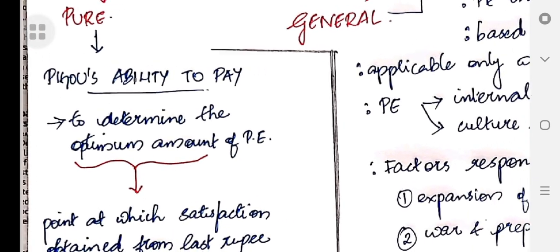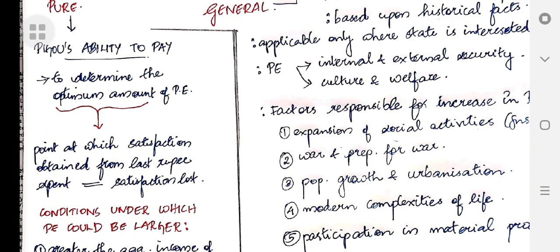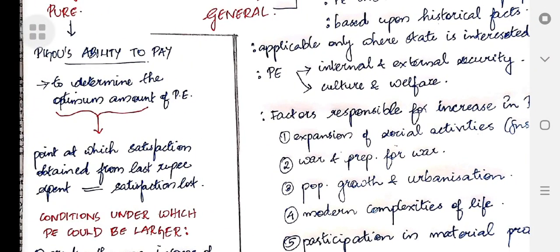Under pure theory, we are discussing Pigou's ability to pay theory, given by the neoclassical economist A.C. Pigou. In this theory, he tried to determine the optimum amount of public expenditure. The optimum amount of public expenditure is that level at which the satisfaction obtained from the last rupee spent is equal to the satisfaction lost because of the last rupee spent.